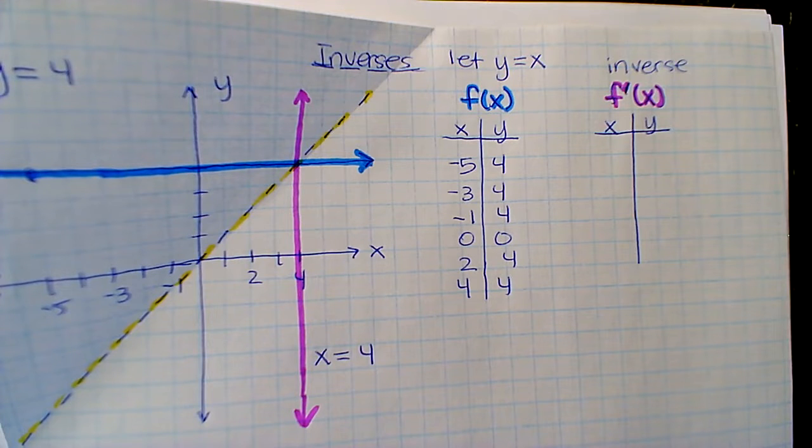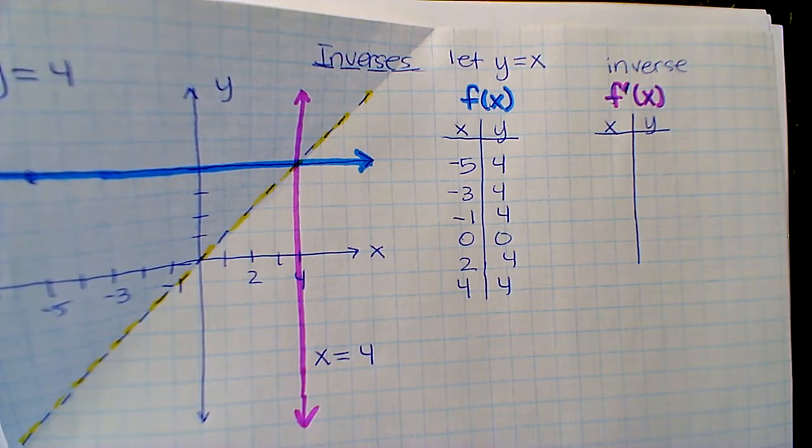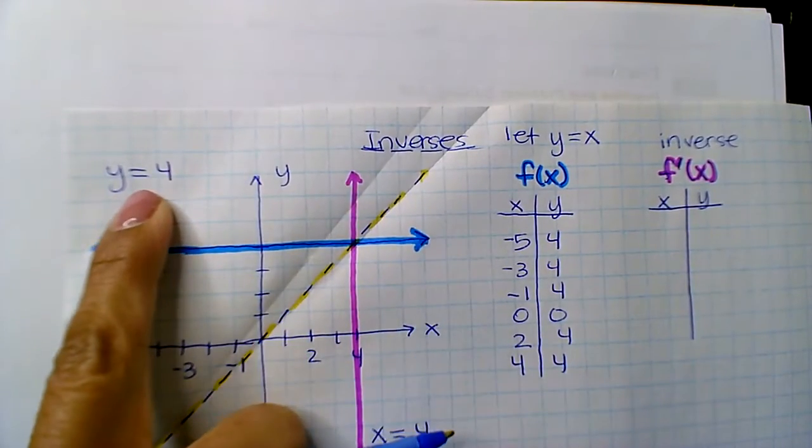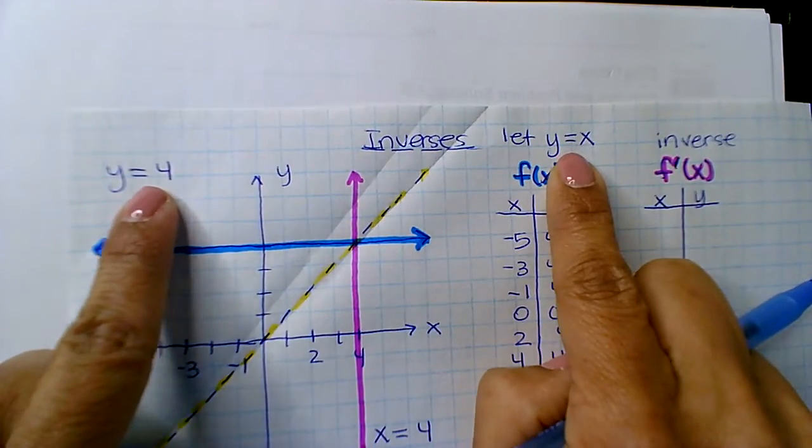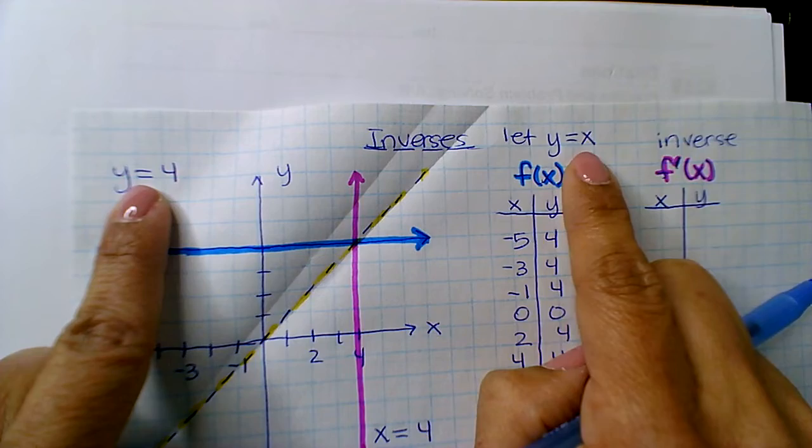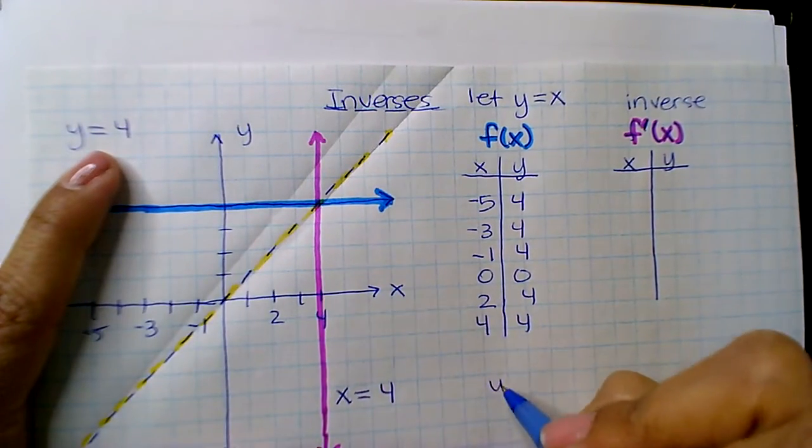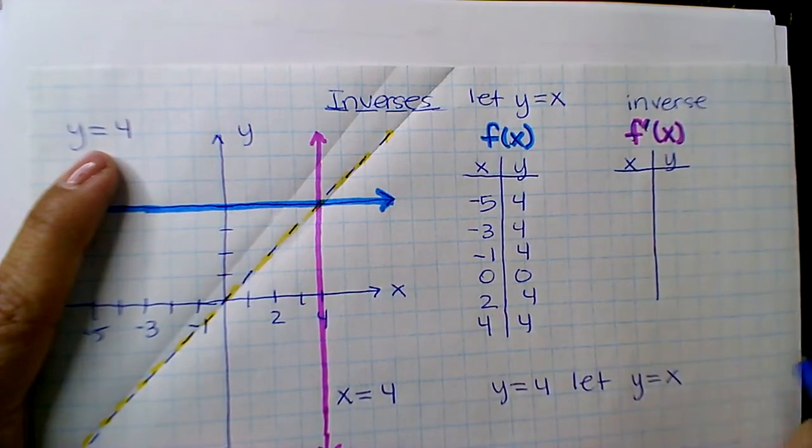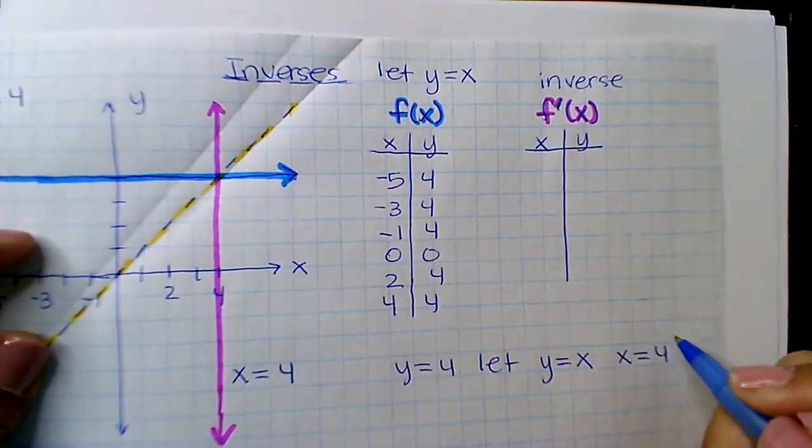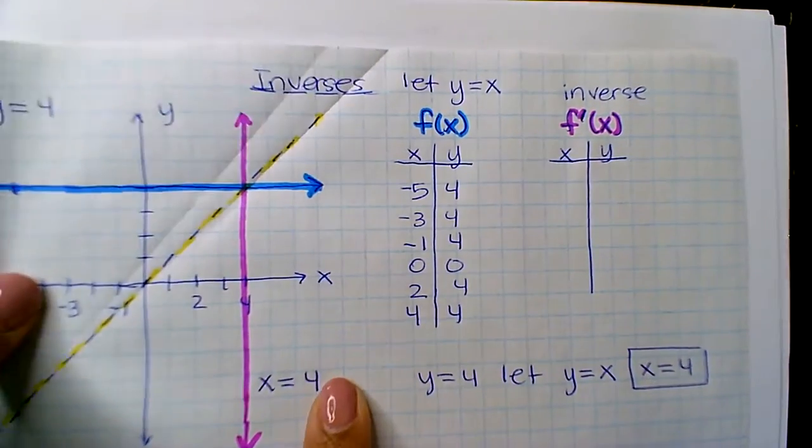If I look at it algebraically, right, remember my original line is y equals 4. If to find the inverse to this line you let y equal x and x equal y, well if I'm given y equals 4 and I let y equal x in my inverse, now x equals 4, and that's that line right there that I got off.